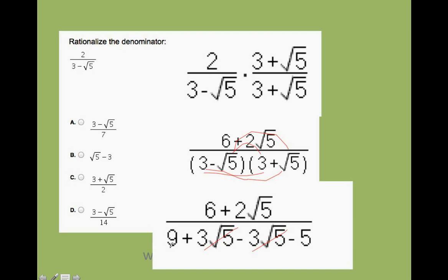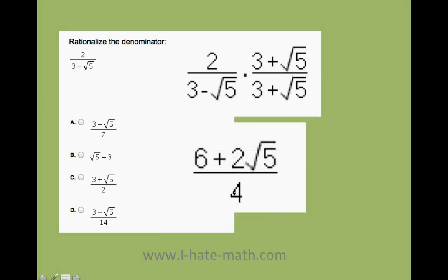All right, so now I only have 9 minus 5, and that equals 4. Finally, my answer, I have a 6, 2, and a 4. And I say, hmm, I can actually simplify this. If everyone is divisible by 2, I can do this.